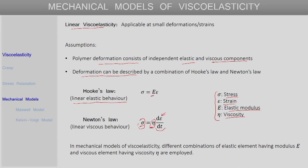In the mechanical models of viscoelasticity, the elastic component is typically represented by what is called a Hookean spring, which has a constant elastic modulus E. The viscous element has a constant viscosity eta and is normally represented by what is called a dashpot — a kind of damper system containing a liquid with viscosity eta. The aim of any of these simple mechanical models is to try to combine these two simple laws to describe viscoelastic behavior.